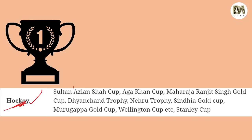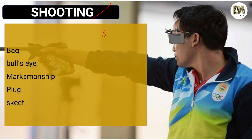Next, Shooting. Games like shooting, table tennis, athletics, and golf are rare games from which many questions are asked. Shooting terms to expect: Bag, Bull's Eye, Marksmanship, Plug, and Skeet.